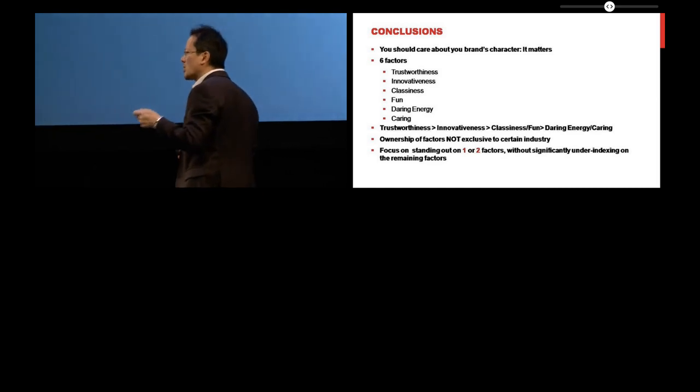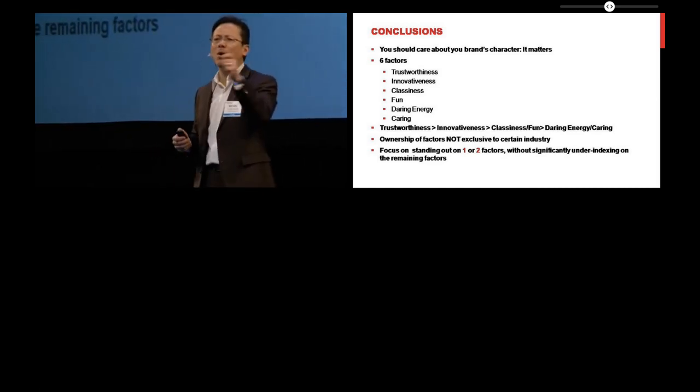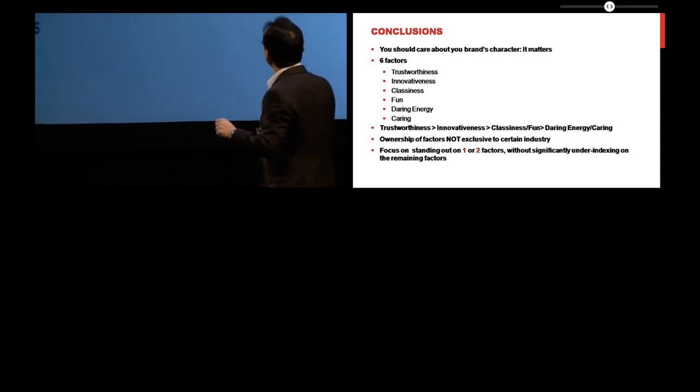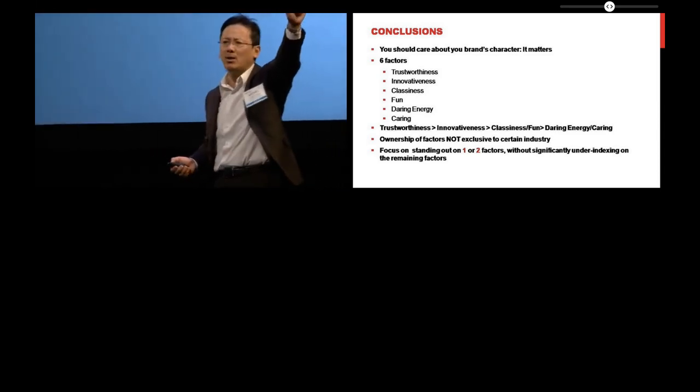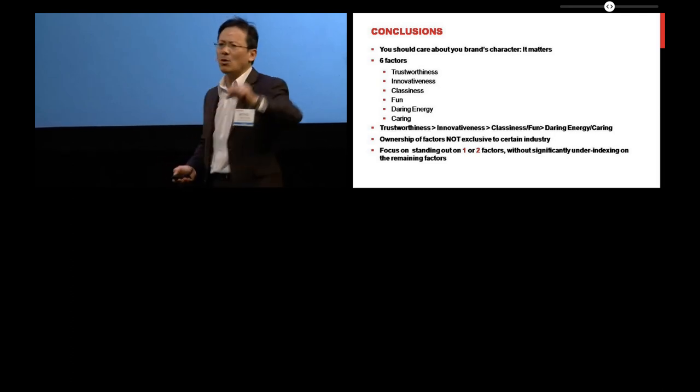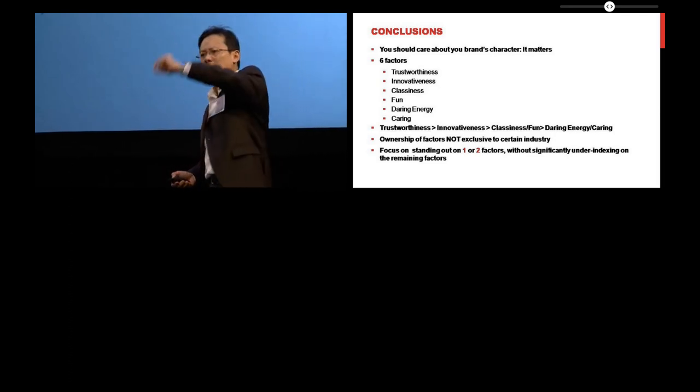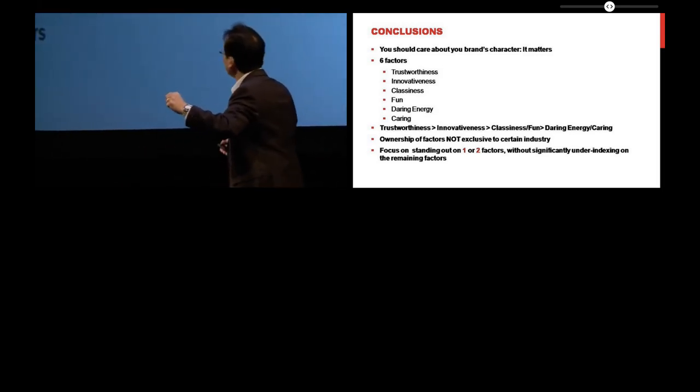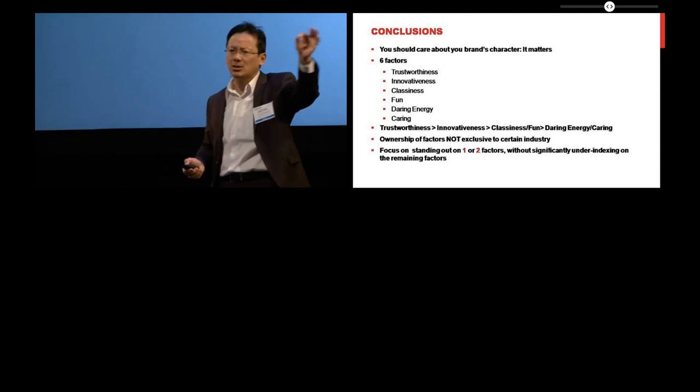And one of the things that you need to take away is that not any one industry owns any one dimension. So it's not that classiness is owned only by luxury or innovativeness only by technology. As I showed you with some of my charts, a lot of industries can benefit from trustworthiness or innovativeness, et cetera, if it is added to other dimensions.